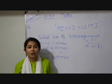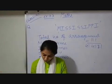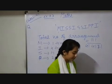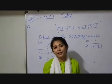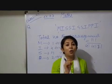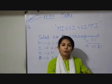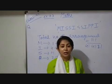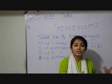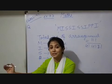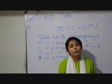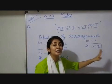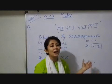Now, we have to find arrangements where all I's do NOT come together. The question asks all I's should not come together. What I will do: from the total arrangements, subtract the arrangements where all I's come together. That gives us all I's not coming together — similar to probability: P(E) = 1 minus P(E bar).